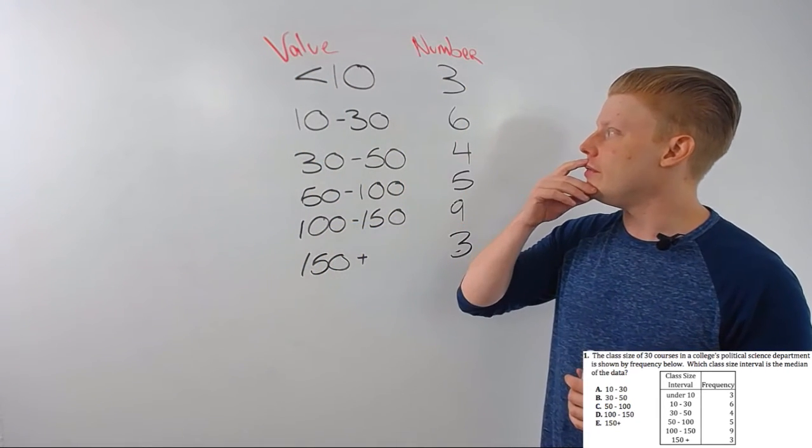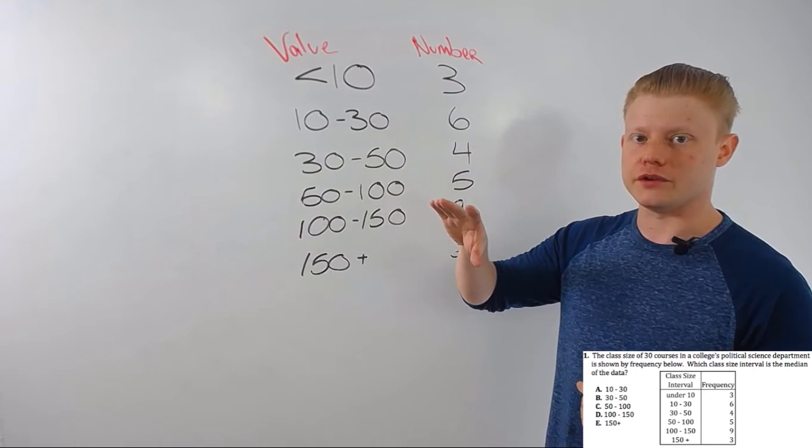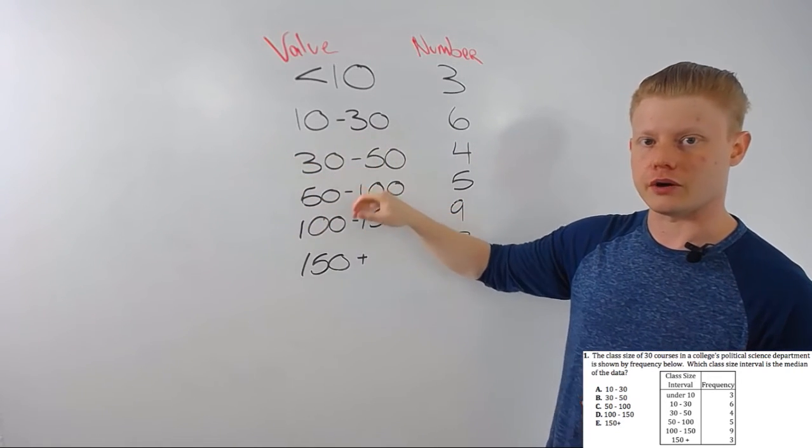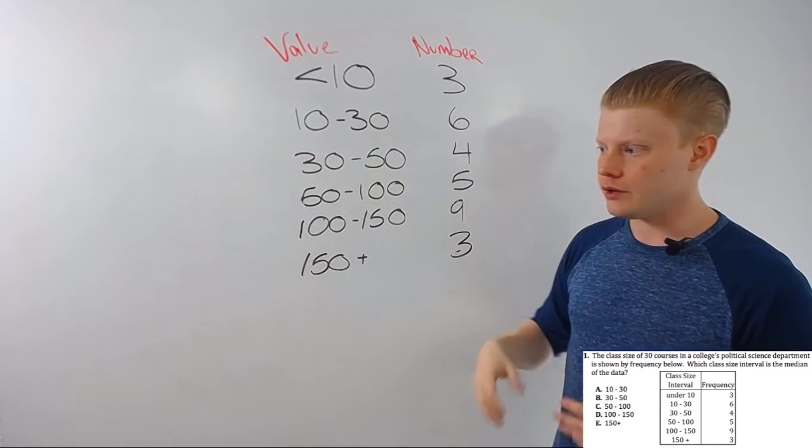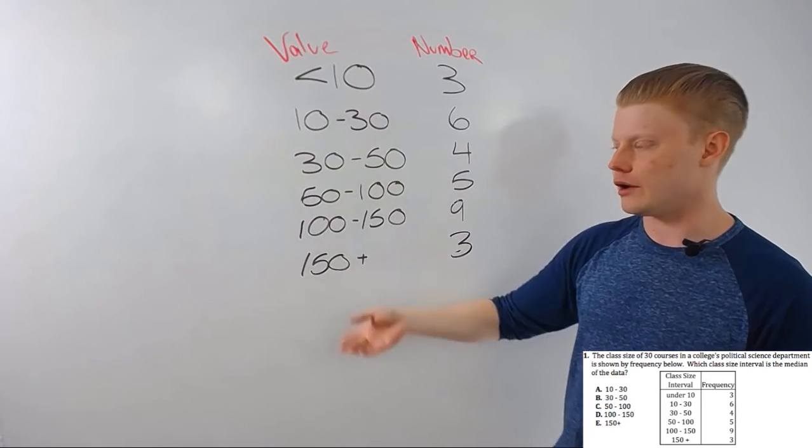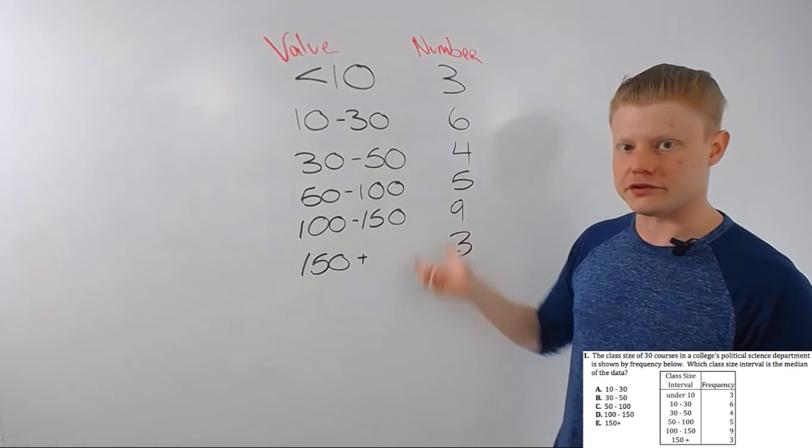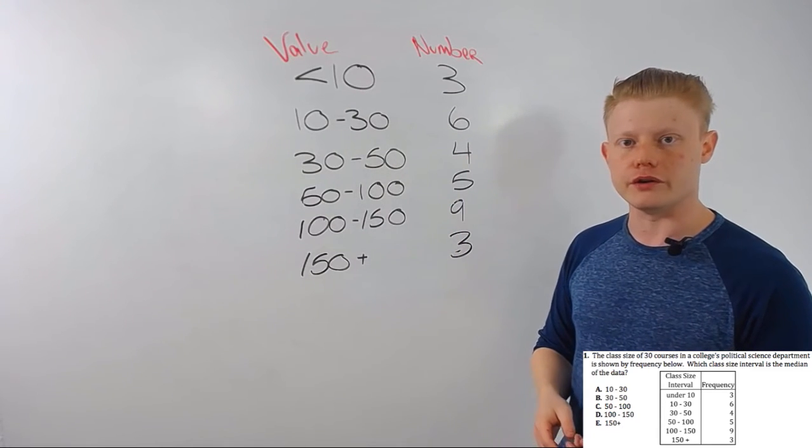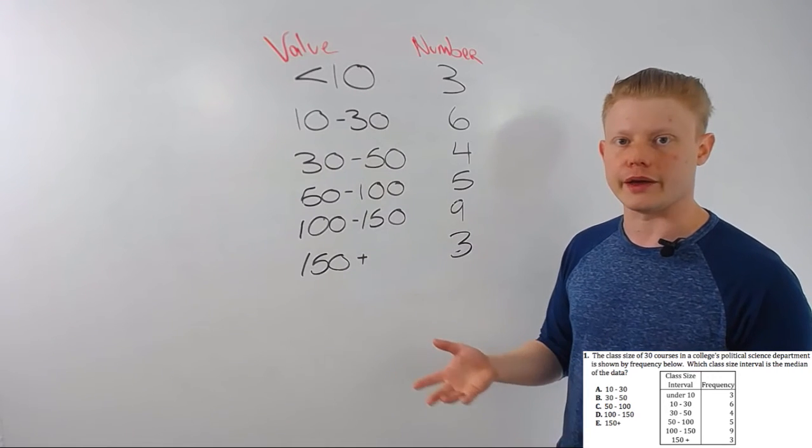But let's leave that aside. The most common mistake I see on these problems is people pick one of these sort of middle ranges, because they say, well, median's middle number, these are already in order - I don't know what this is doing and it's kind of intimidating - so whatever, 30 to 50 or 50 to 100, something like that.